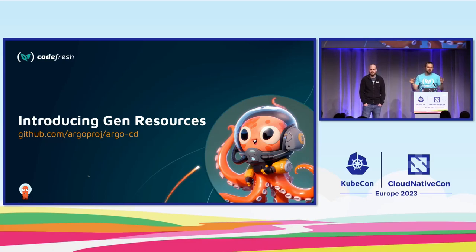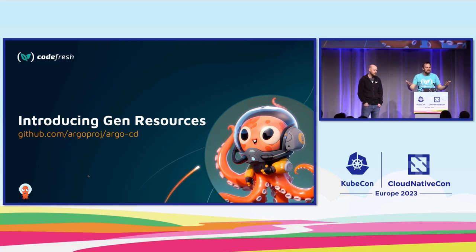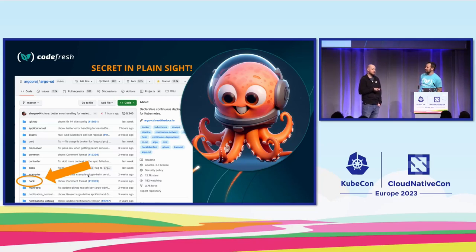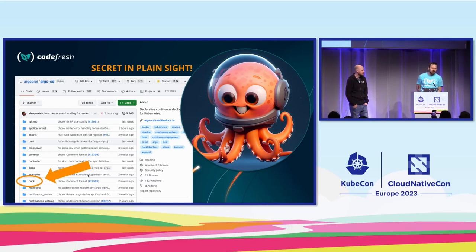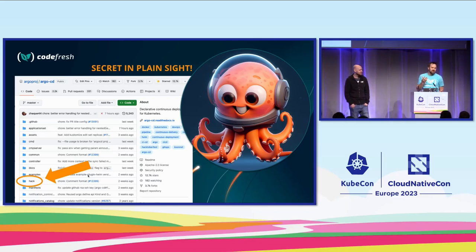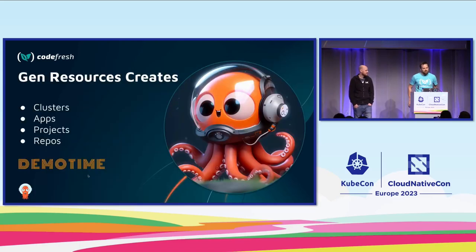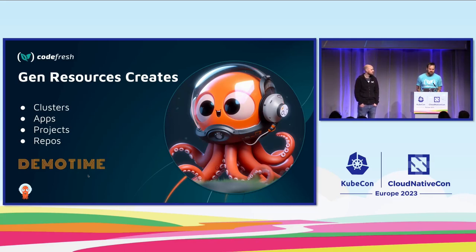We're not going to get quite to ten thousand today, but there is a wonderful tool for you. It's called gen_resources — secret, hidden, undocumented. This is your chance to learn how to use it, document it, and get that first commit into the open source project. It's been hiding in plain sight the whole time, right in the Argo CD repo, under the hack folder. Hack folders are famous for secret goodies — I recommend when you go to an open source project, first thing you do is look in the hack folder.